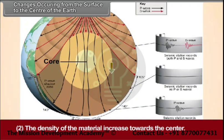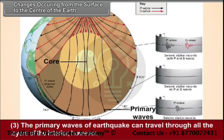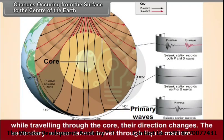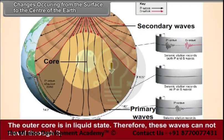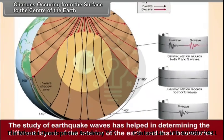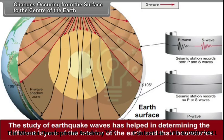The density of the material increases towards the center. The primary waves of an earthquake can travel through all the layers of the interior. However, while traveling through the core, their direction changes. The secondary waves cannot travel through liquid medium. The outer core is in liquid state; therefore, these waves cannot travel through it. The study of earthquake waves has helped in determining the different layers of the interior of the earth and their boundaries.